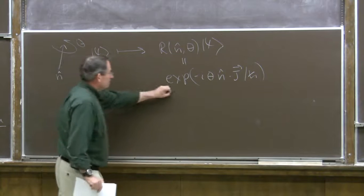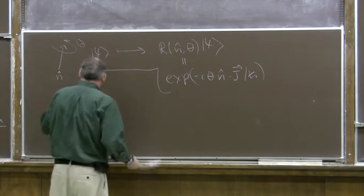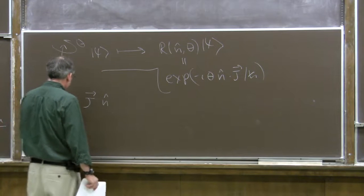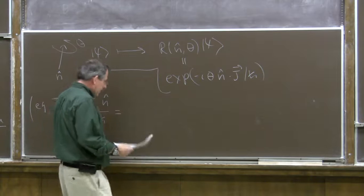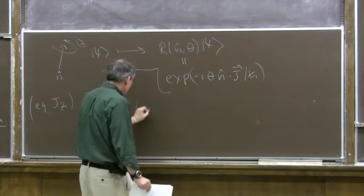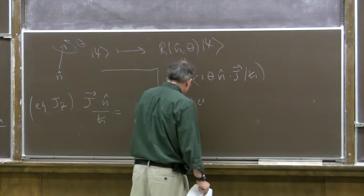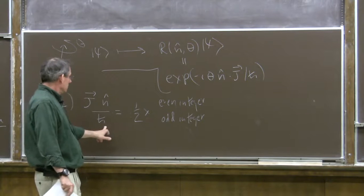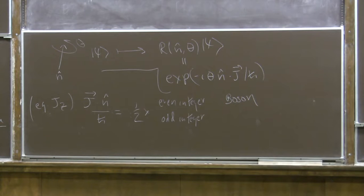A particle with angular momentum that is an integer multiple of ℏ is a boson. If the angular momentum is an integer plus one-half times ℏ, then it's a fermion. One way of appreciating the difference is to consider rotating the particle by 2π. For a boson the unitary transformation gives e to the (i·2π·integer) = 1, the identity. For a fermion it gives e to the (iπ times (integer + 1/2)) = −1, so the state vector changes sign.